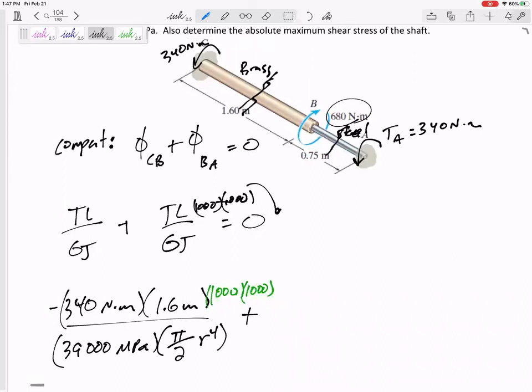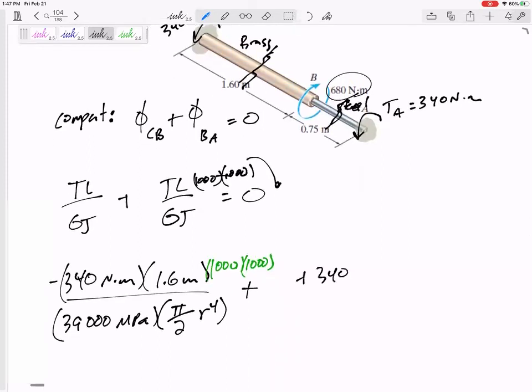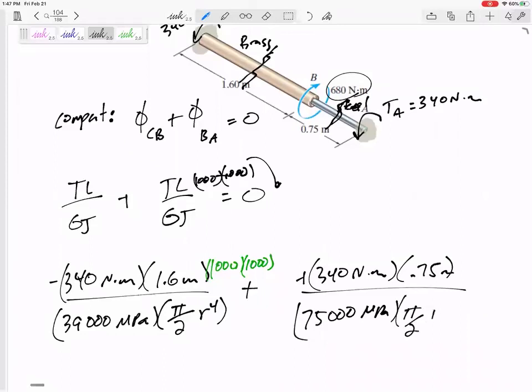So now, when I come over here to the steel section, what is the internal torque T inside the steel section? Positive 340 Newton meters. Its length is 0.75 meters. Its value is 75,000 MPa. And pi by 2, 15 to the fourth adds up to zero. My only unknown is my R.